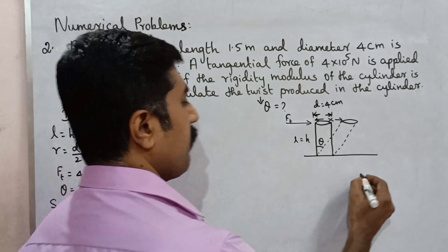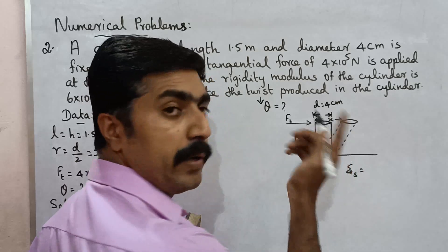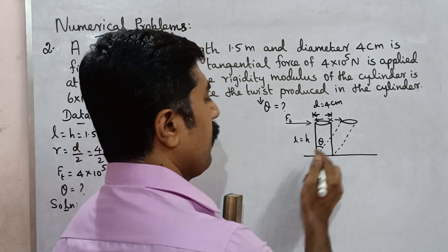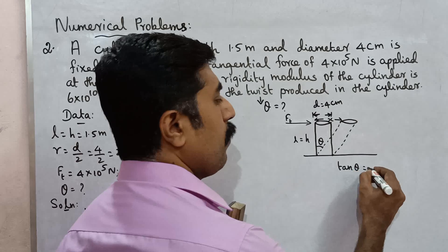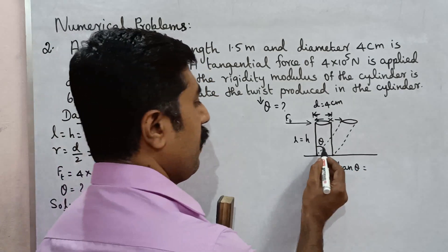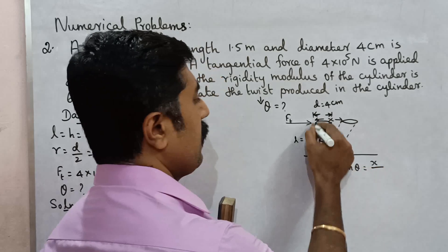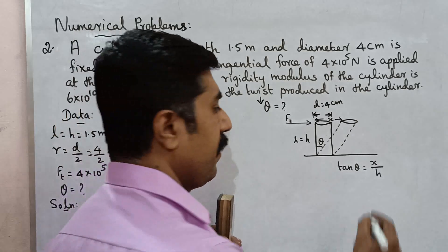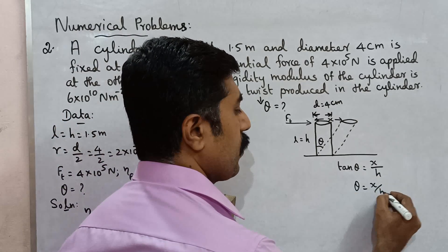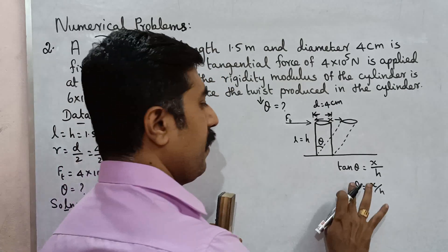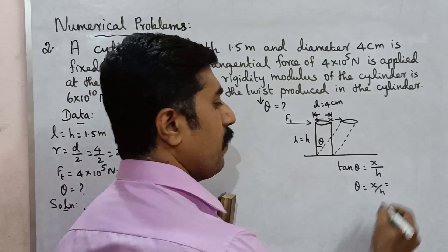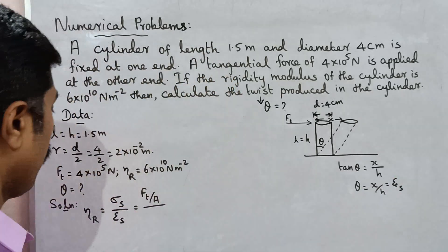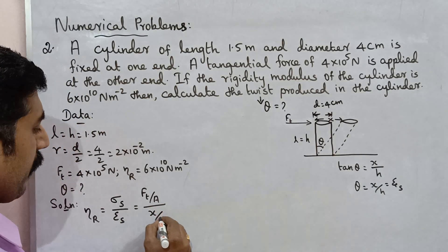Shearing strain is equal to x divided by h. Actually, tan theta is equal to opposite side by adjacent side — that is x by h. If theta is small, we can write tan theta approximately equal to theta, so theta equals x by h. So this theta is the twist angle.